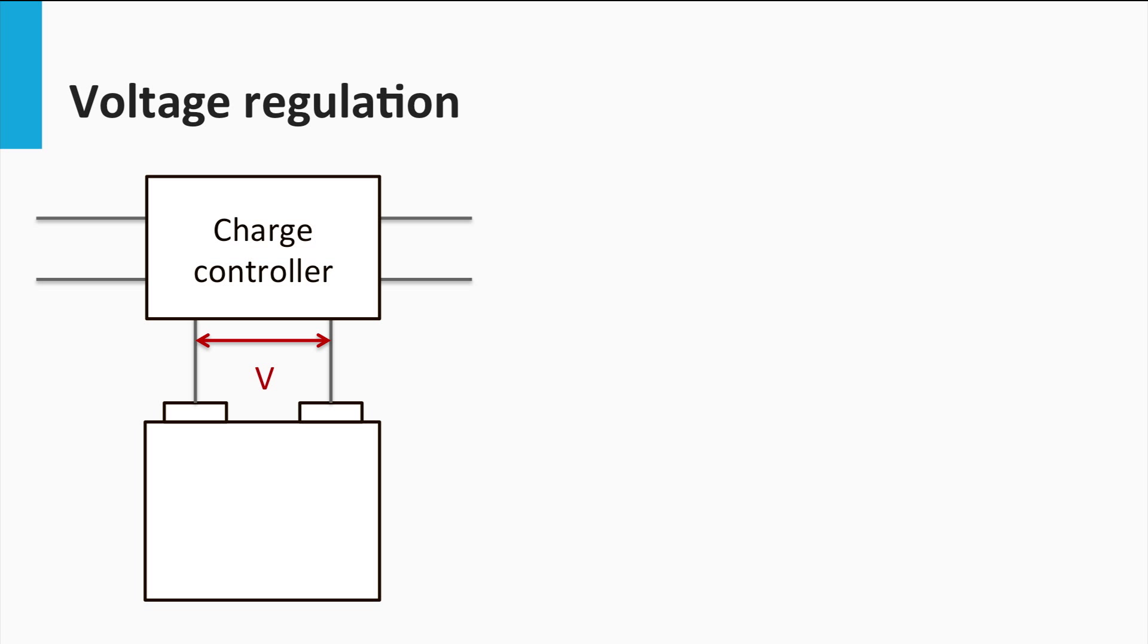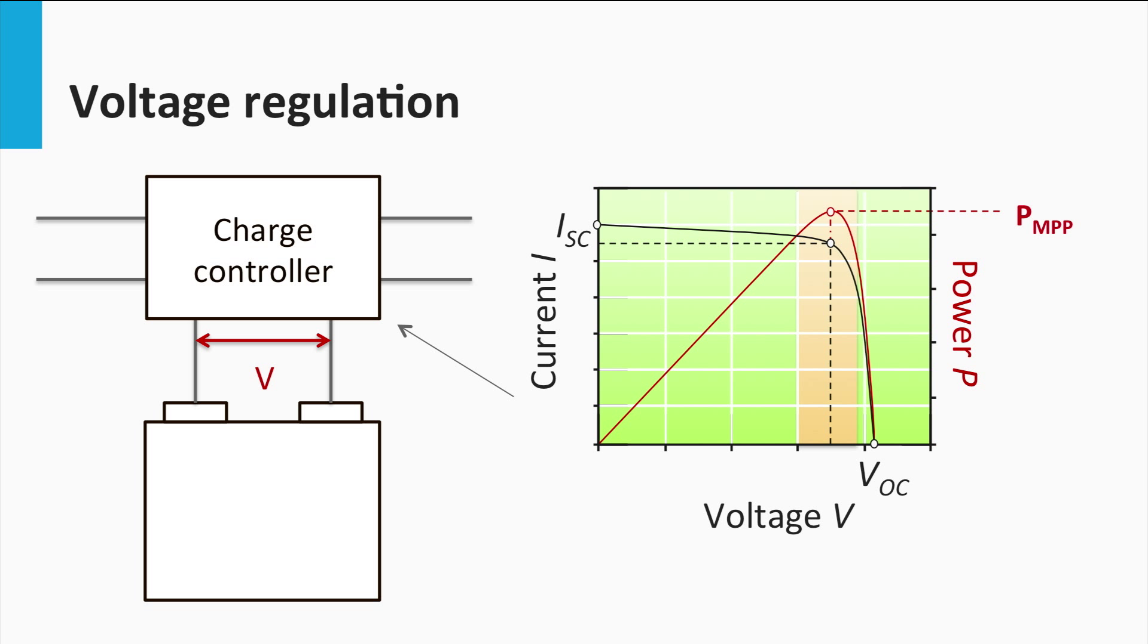Therefore, the charge controller needs to do an appropriate voltage regulation to ensure the battery operates in the specified voltage range while the PV array functions at maximum power point. This means that the modern charge controller can, and often does, integrate a maximum power point tracker within its design.